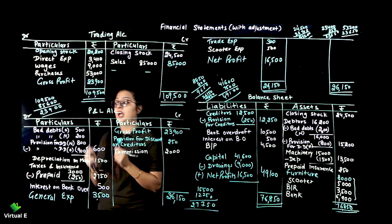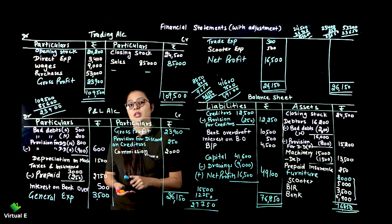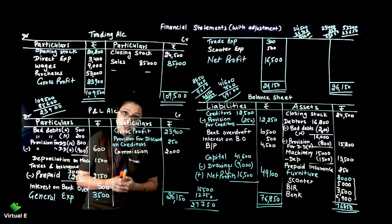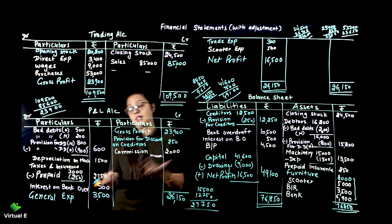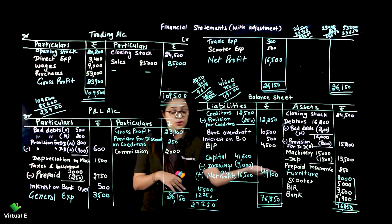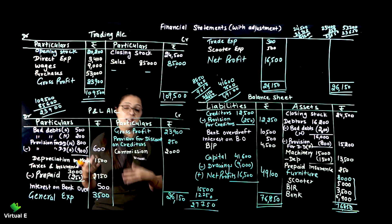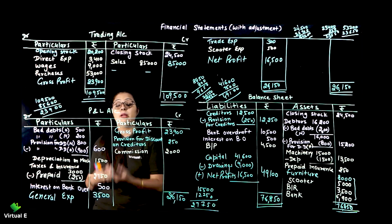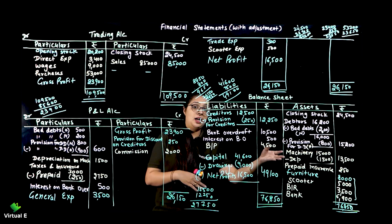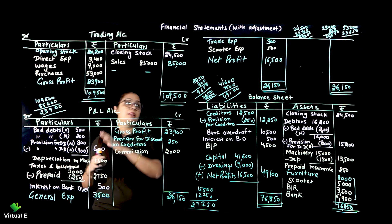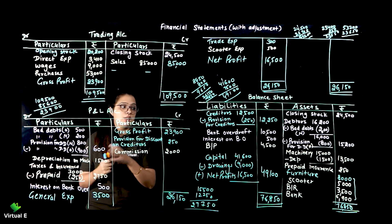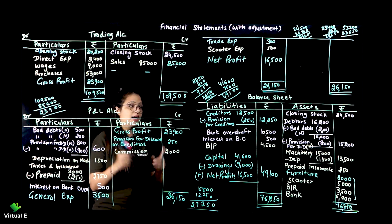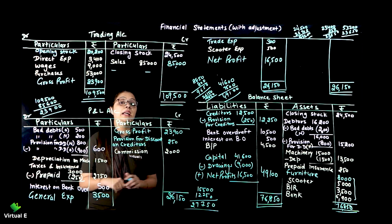Summary of key adjustment rules: do all adjustments first, then transfer account amounts, then take totals. The oh-no-no concept must be known. Provision for creditors - show where it goes. If outstanding, add it; if prepaid, minus it. Prepaid expense goes to asset; outstanding expense goes to liability. Income received in advance - minus from income and show as liability. Accrued income - add and show in assets. Next sum will also cover contingent liability. After this we start incomplete records.